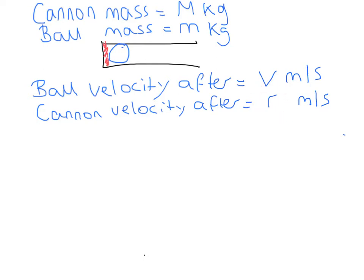Okay, so let's consider the system before the explosion. Because what we're going to aim to do is show conservation of momentum between before and after. So before the collision, the total mass of the cannon and ball is big M plus little m, and it's traveling at zero meters per second.